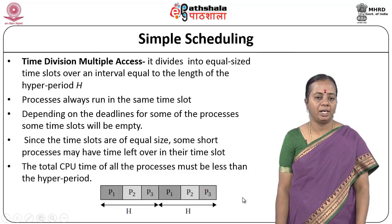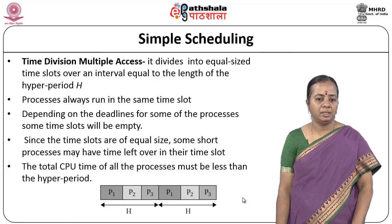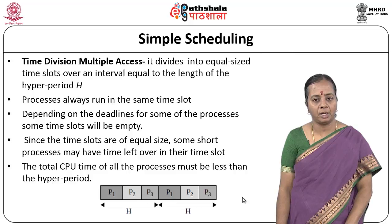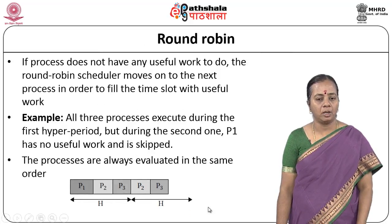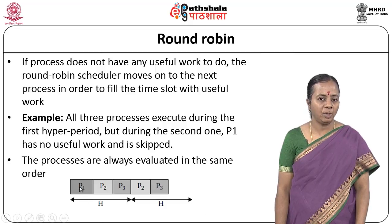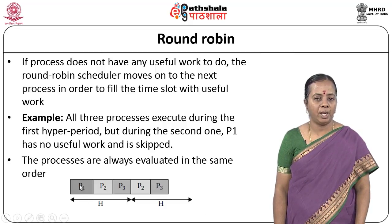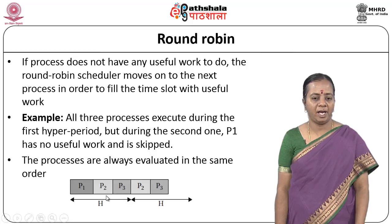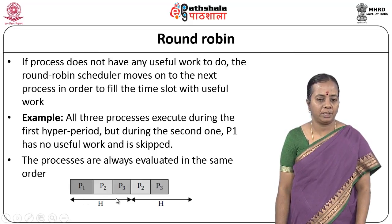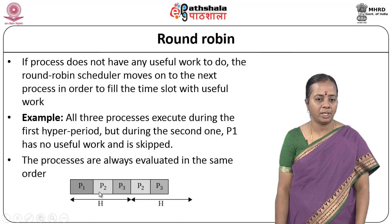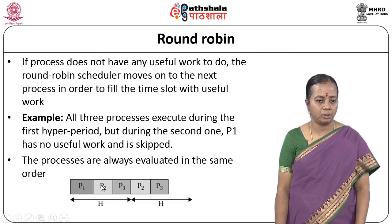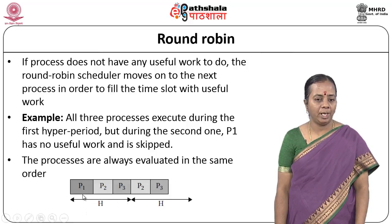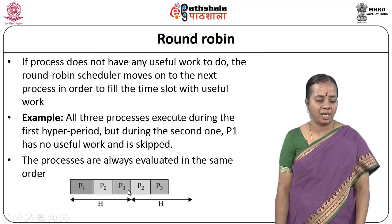This wastage makes the TDMA kind of scheduling not efficient when looking at CPU utilization — the CPU is wasted during idle periods. People think this has to be avoided when looking at different algorithms. The next is the Round Robin algorithm, which uses the same concept as TDMA — the hyper period is divided into equal time slots. If there are 3 processes, the hyper period divided by 3 gives one time slot. Time slot 1 is given to P1, time slot 2 to P2, and time slot 3 to P3.